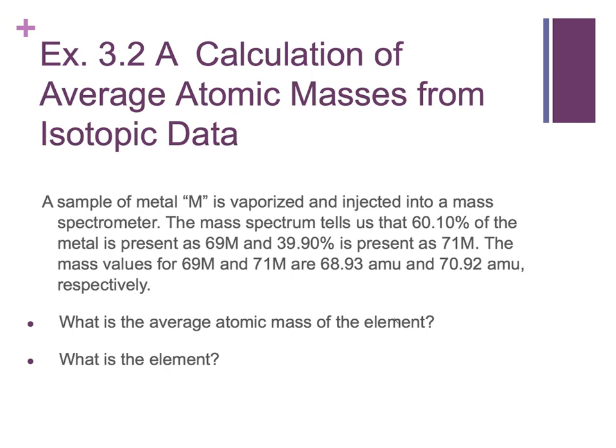For example, here's an unknown, and this gives us actual percentages. A sample metal M is vaporized. We get 60% of it is present as M69, and 39.9 is M71. And in physical science, we would have just dealt with the masses of 69 and 71, but because of Einstein's mass defect equation E equals MC squared, M69 is really 68.93, and M71 is really 70.92. So they're never exact whole numbers anyway. So just kind of use what they give you.